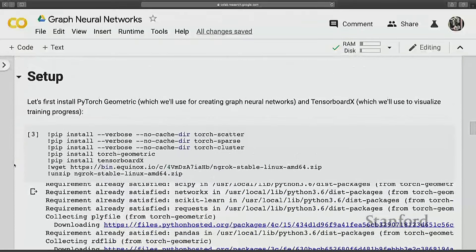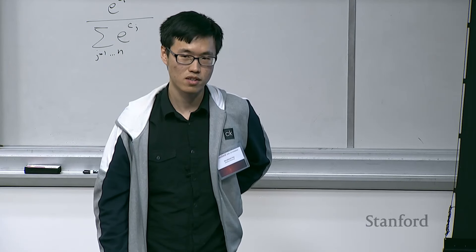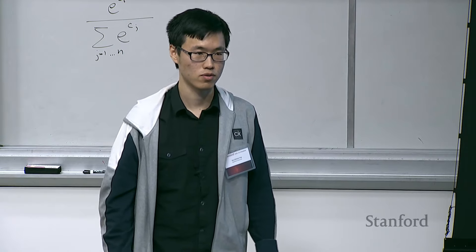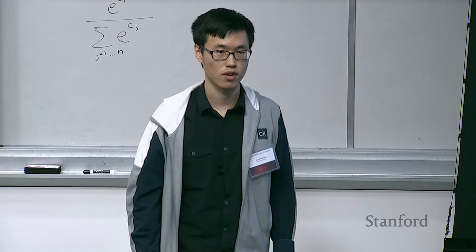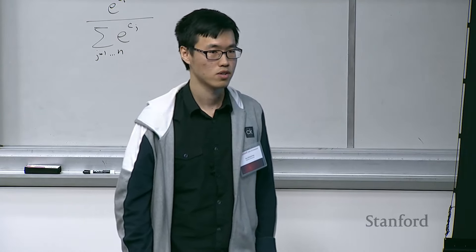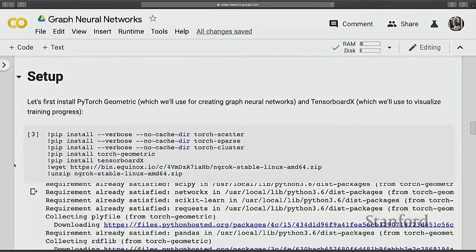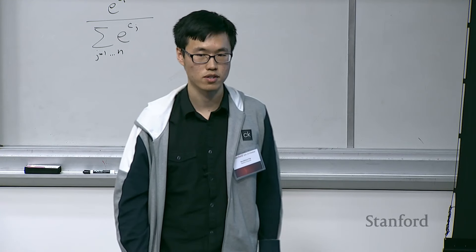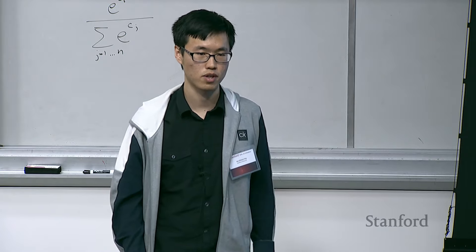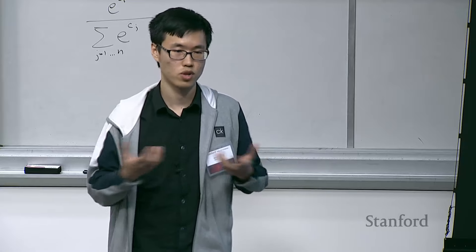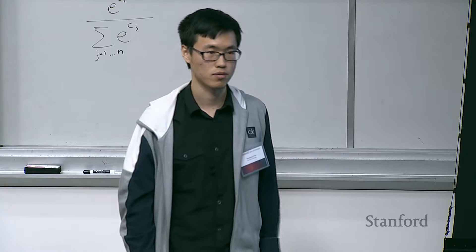Next we'll cover PyTorch Geometric. This is just one library we can use — there are others like Google's graph_nets for TensorFlow, and DGL from Amazon which supports both PyTorch and MXNet. PyTorch Geometric is easy to use, but you can also implement GNNs from scratch using matrix multiplication of your adjacency matrix and feature matrix in PyTorch, which is not that hard.